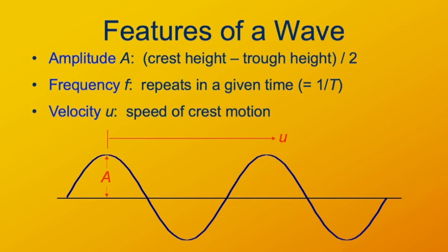Something new about waves that didn't occur with oscillations is velocity — how fast the wave moves through space. For this class, the velocity we're particularly interested in is the phase velocity: how fast a particular phase of the wave, say the crest, moves through space. I like to use the symbol u for wave velocity or wave speed, though you may see v used as well. There's no general convention, so just be aware of what's going on.